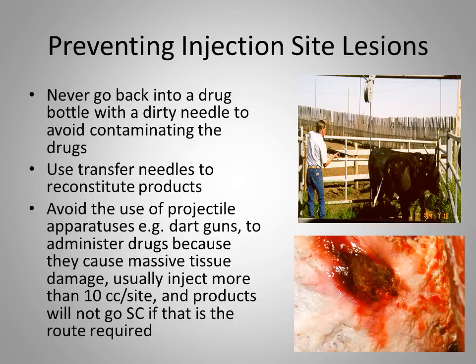In the picture below of a hanging carcass, there is a large red, greenish area — this is the result of using a dart gun to administer Micotil under the skin. Micotil is a drug that must be given subcutaneously, but with the dart gun, the product was actually administered into the muscle, causing severe tissue damage.